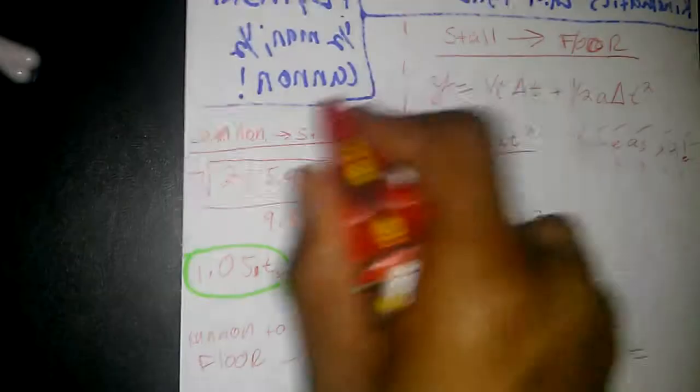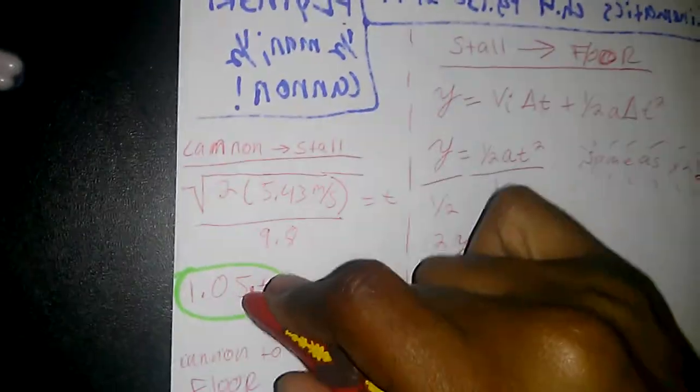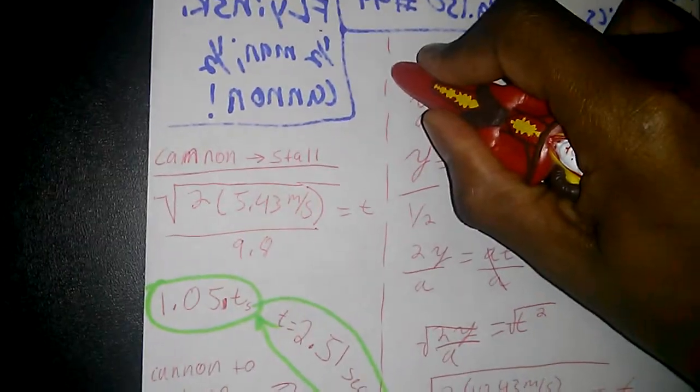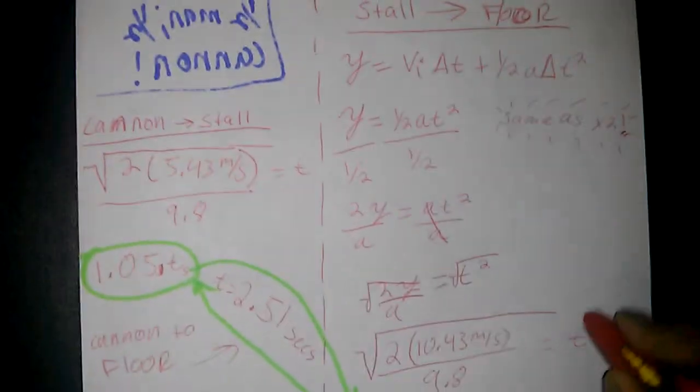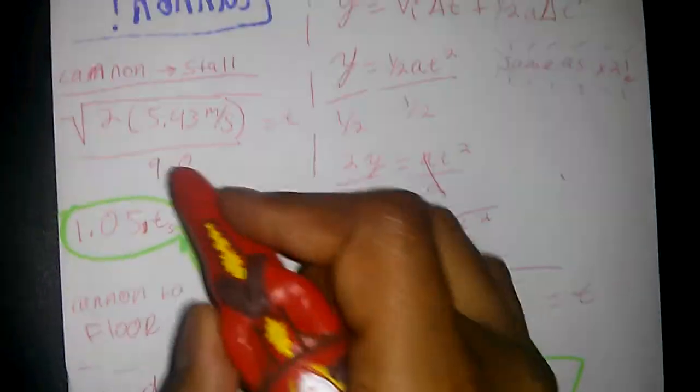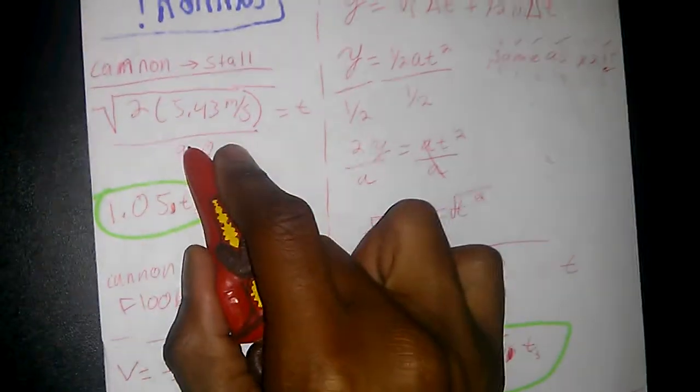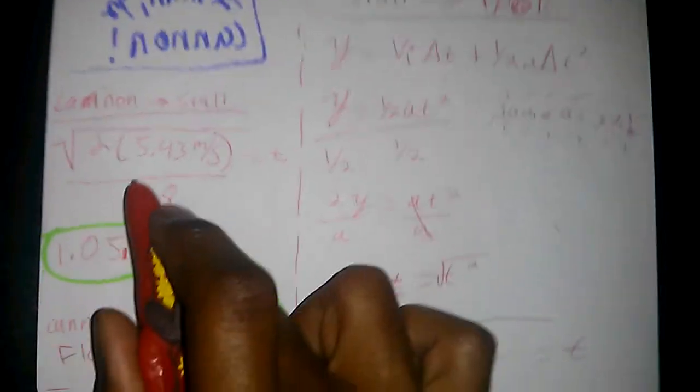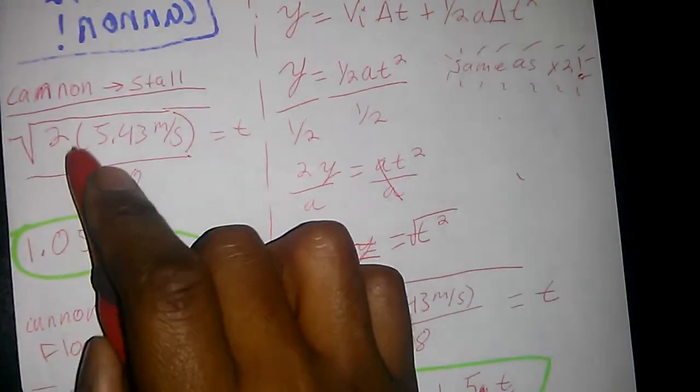And now you're going to do from cannon to stall. So the initial here to here. We just did from stall to floor. Now we need to do here to here. Imagine you're making a pyramid. So you're going to go ahead and just transfer the equation over there. No need to do double the work, as long as you conceptually understand it.